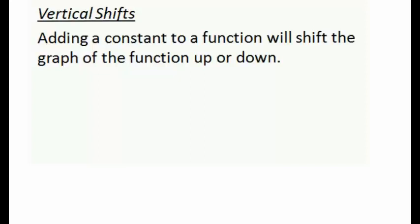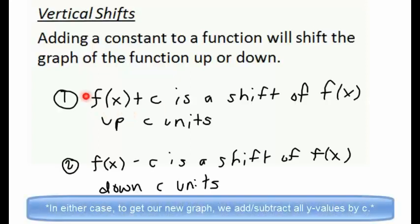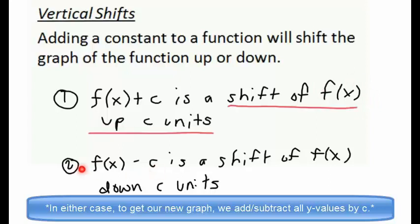To begin, let's talk about vertical shifts and vertical stretches. If we were to add a constant c to our function to get f(x) + c, this is going to result in a shift of our original function f(x) up c units. If we were to subtract a constant to get f(x) - c, this is going to result in a shift of our original function f(x) down c units.